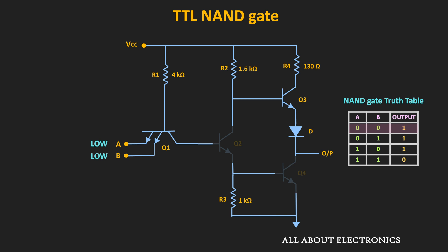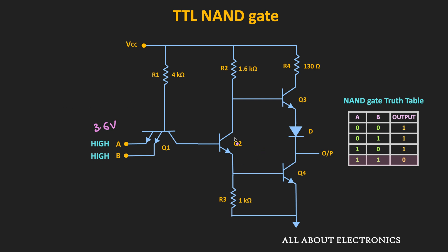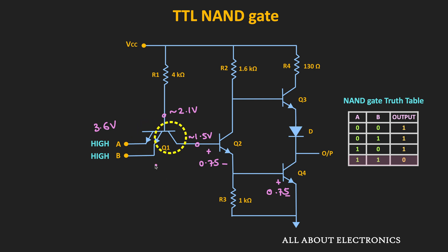Now let's take the other extreme case when both inputs A and B are high, say 3.6V. As seen in the earlier TTL inverter video, when input voltage exceeds 1.5V, Q2 and Q4 get forward biased and remain ON. Going beyond 1.5V, both Q2 and Q4 operate in saturation, making VBE roughly equal to 0.75V. Due to that, the voltage at this node is roughly 1.5V, so the voltage at the base of Q1 will not go beyond 2.1V. In this condition, the base-emitter junction of Q1 gets reverse biased while the collector-base junction gets forward biased, causing Q1 to operate in the reverse active region.